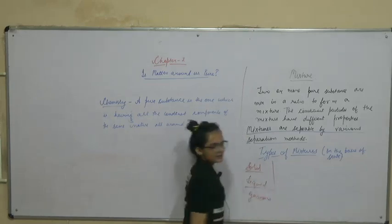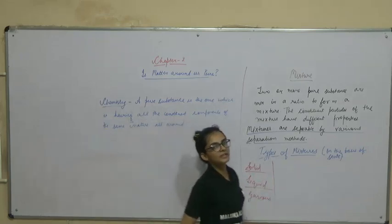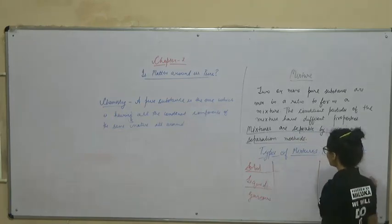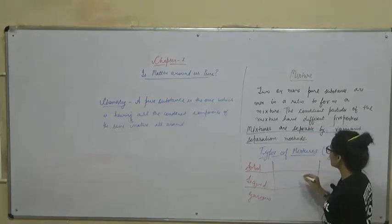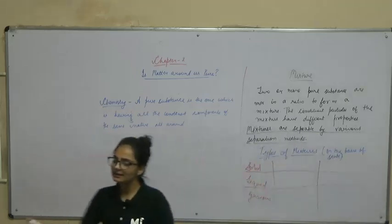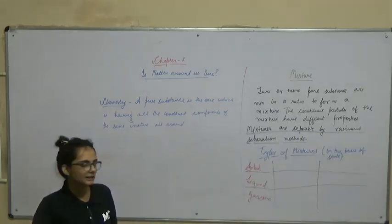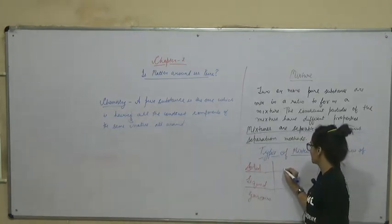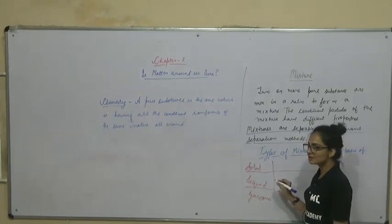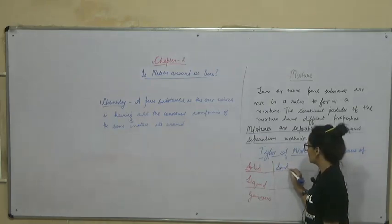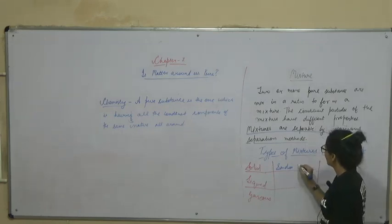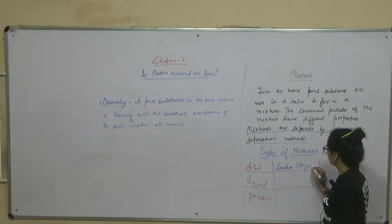We have the solid mixtures, we have the liquid mixtures, and we have the gaseous mixtures. If we have solid, liquid, and gaseous mixtures, then their pure substances will respectively be solid, liquid, and gases. Let us first talk about the solid mixture. Solid mixture: an example is sand, which is made up of clay, silt, etc.